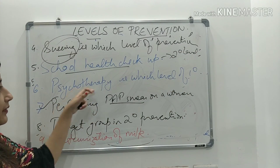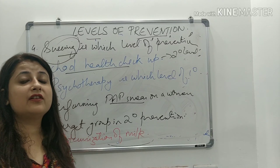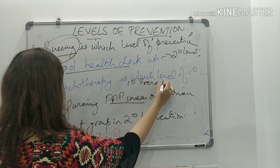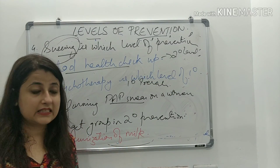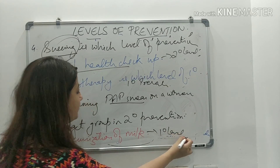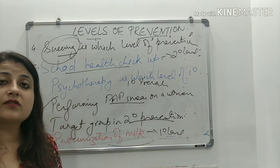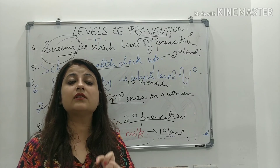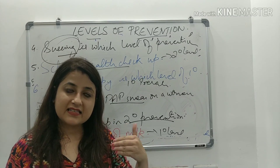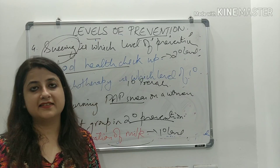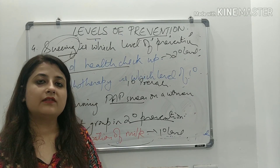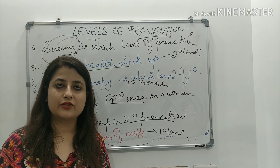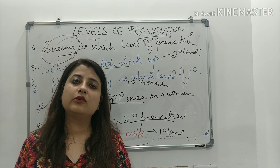Psychotherapy is specific protection, so it is primary prevention. Pasteurization of milk is also specific protection, so it is primary level of prevention. The target group in secondary prevention is individuals with established disease — disease has started, we want to arrest it at its earlier stages. Today I have tried to teach you about levels of prevention using MCQs. I hope this makes your concept clear. If you have any questions, do put them in the comment section below. Thank you so much for watching.